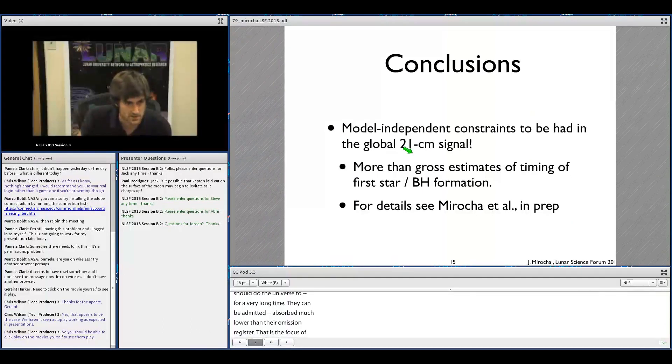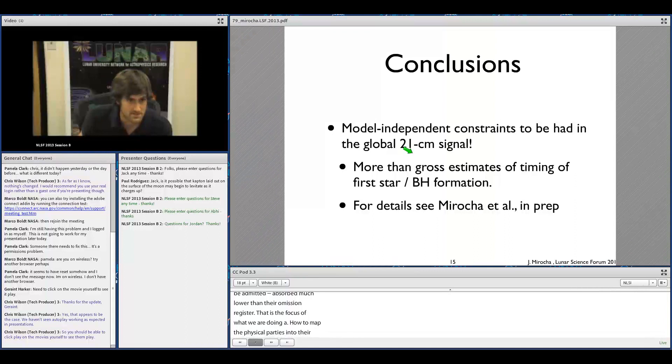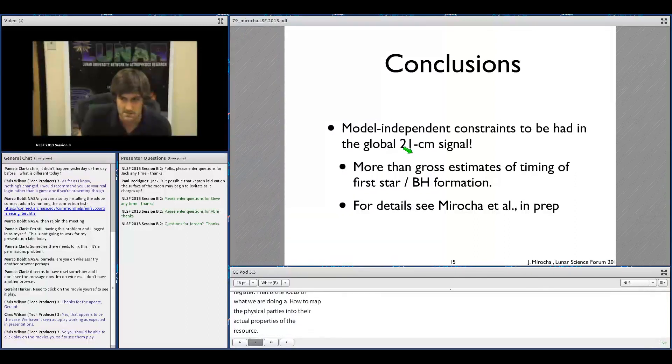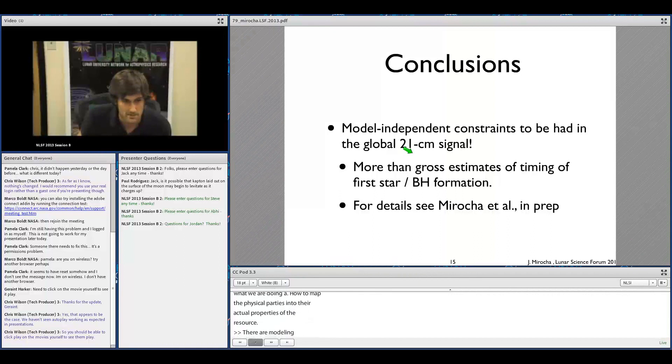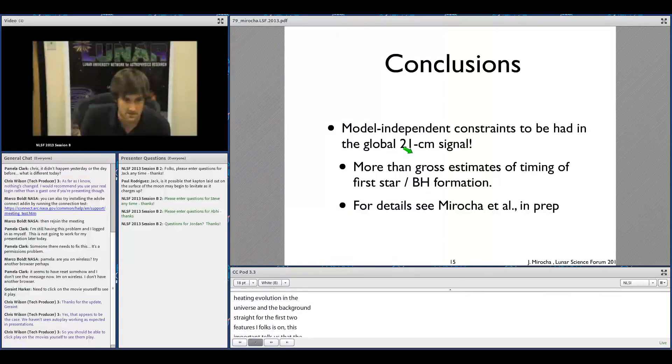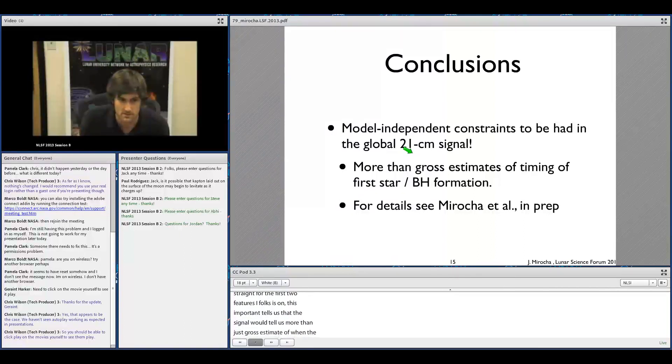My conclusion is just really quickly that there are model-independent constraints to be had from the global signal, namely properties of heating evolution of the universe and the Lyman alpha background strength just for these first two features that I focused on. This is really important because it tells us that the signal will tell us more than just gross estimates of when the first stars and black holes form. In principle, we can learn something about their properties as well. Stay tuned for a paper that should be submitted soon with the details of this work. Thank you.